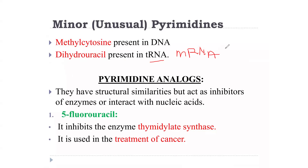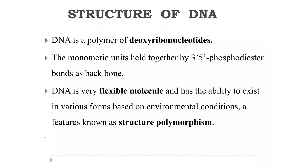Pyrimidine analogues have structural similarities to pyrimidines but act as enzyme inhibitors or interact with nucleic acids. 5-Fluorouracil is a pyrimidine analogue that inhibits thymidylate synthase and is used in the treatment of cancer.